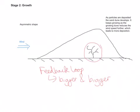And over time, it creates an asymmetric shape. You can see that the windward side over here is much shallower and longer than the leeward side over here. So that's the growth stage.